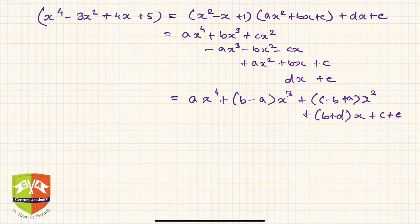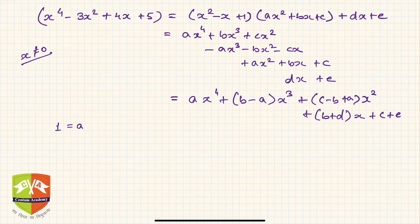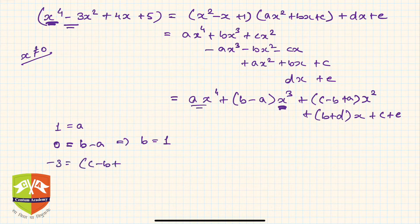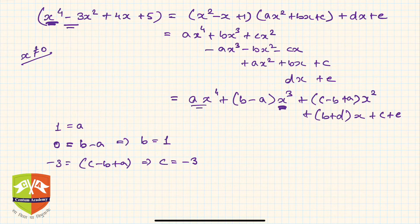Now equating coefficients on both sides (since x ≠ 0): The coefficient of x⁴ gives a = 1. The coefficient of x³ gives b - a = 0, so b = 1. The coefficient of x² gives c - b + a = -3, and since a = 1 and b = 1, we get c = -3. The coefficient of x gives b + d - c = 4; with b = 1 and c = -3, this gives d = 4 - 1 - 3 = 0.